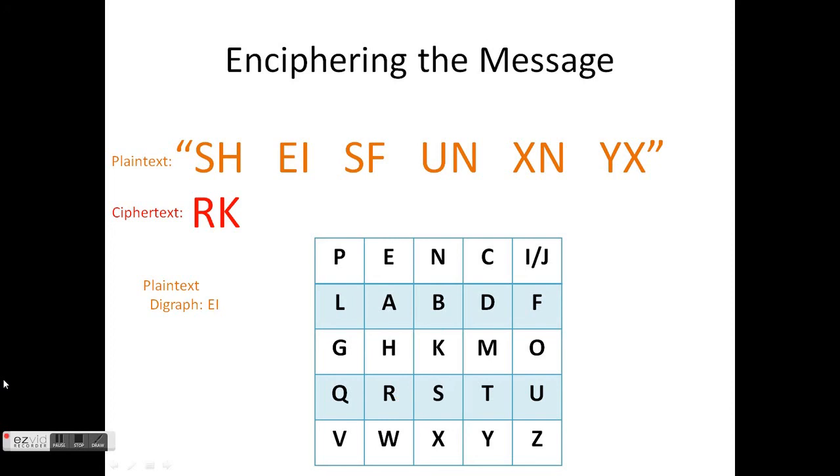Next, we have the plaintext digraph EI. Highlight the E, and then highlight the I. E and I are in the same row, so we replace them with the letters to the right. E becomes N, and I circles back to the beginning of the row and becomes P. So the plaintext digraph EI becomes NP.